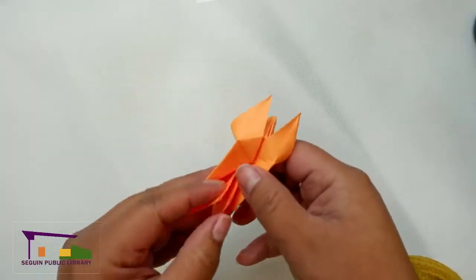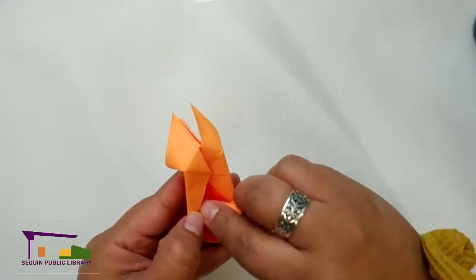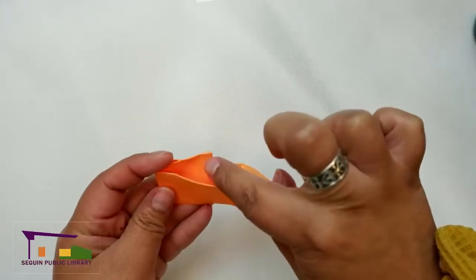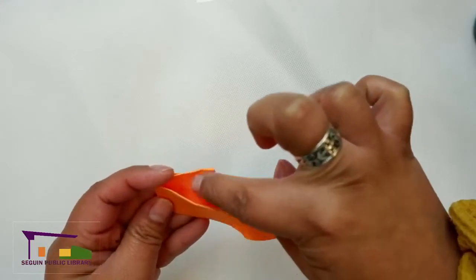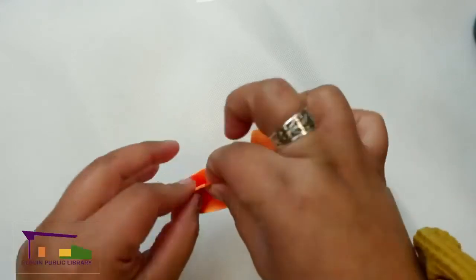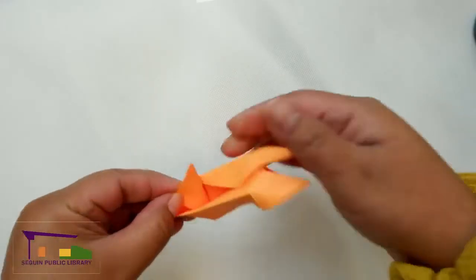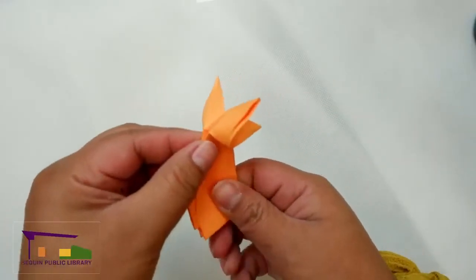And to make that tail pointed, what we're going to do is you can either fold it to this side or fold it to that side. All you want to do is crease it right at this angle, right in the middle of that kind of squared off corner. So it creates a little peak in the back of the fox.